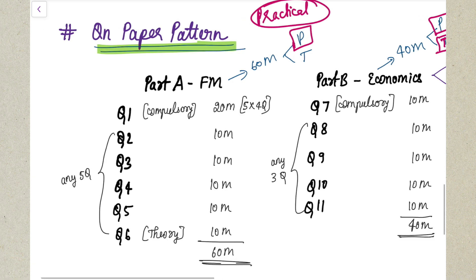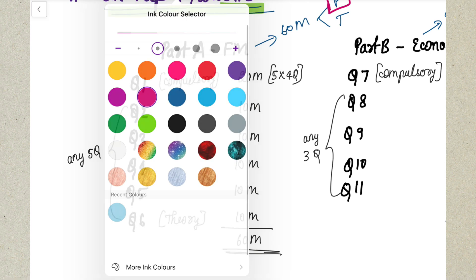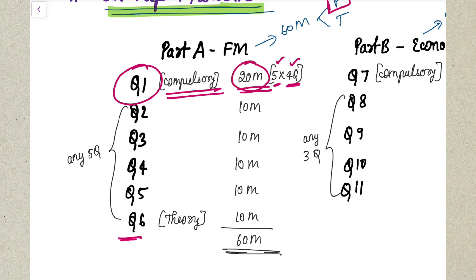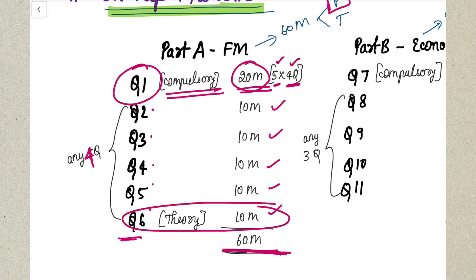In Financial Management, you are totally going to be asked six questions, out of which Question Number 1 is a compulsory question coming for 20 marks. In this first compulsory question you will be given four sub-questions of five marks each, totalling 20 marks. Apart from that, you are given five questions out of which any four you have to attempt, each for 10 marks, giving you 60 marks. Question Number 6 in FM is a theory question - I suggest you do not read it at all. Just attempt until that and you will fetch your 60 marks.